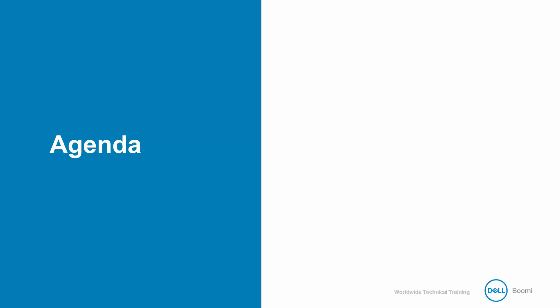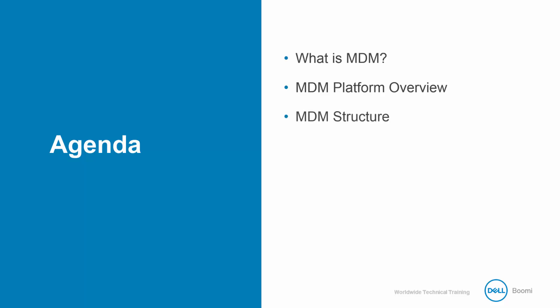Let's take a look at the agenda for this class. We'll begin by discussing what MDM is from a high-level perspective. You'll learn the role MDM fills and the problems it solves within a company. Next, you'll learn about the MDM lifecycle, the architecture of the MDM platform, and how the Atom interacts with both of the platforms. We'll then go over the structure of an MDM solution to give you a better understanding of how we will build our solution.